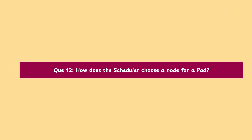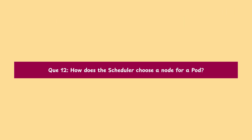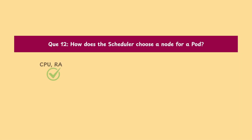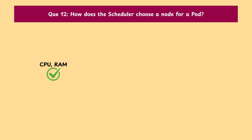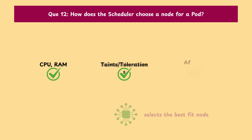Question 12: How does the scheduler choose a node for a pod? It checks resource availability — CPU, RAM — as well as taints, tolerations, and affinity rules, and then selects the best-fit node.